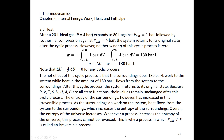Now consider a cyclic process: a 20-liter ideal gas expands to 80 liters against a 1 bar external pressure, followed by an isothermal compression against a P_external of 4 bars. The system returns to its original state. The initial state is 20 liters at 4 bar; the final state is also 20 liters at 4 bar. Since this is a cyclic process, ΔU = 0. However, neither W nor Q is zero.